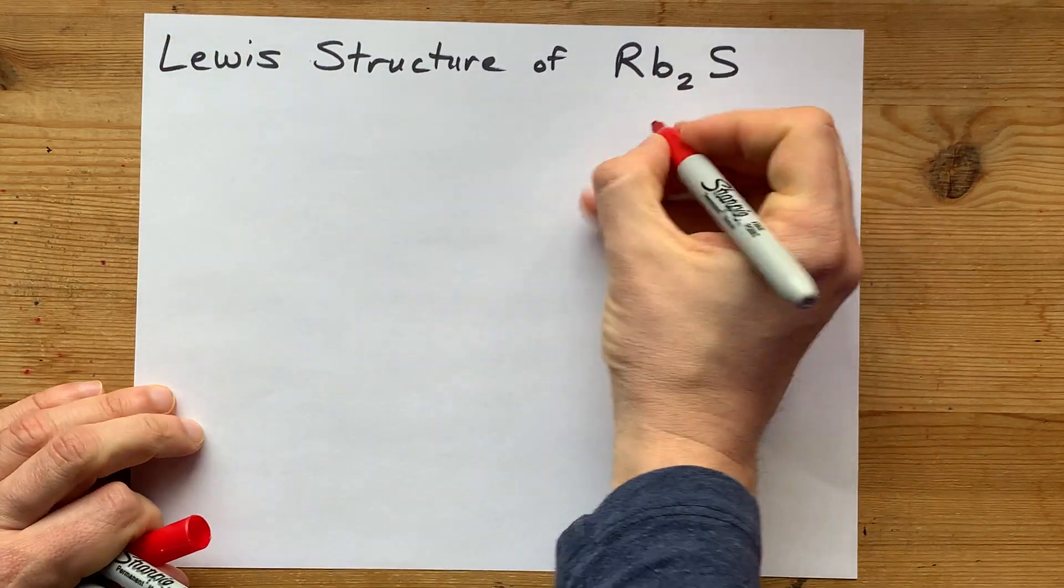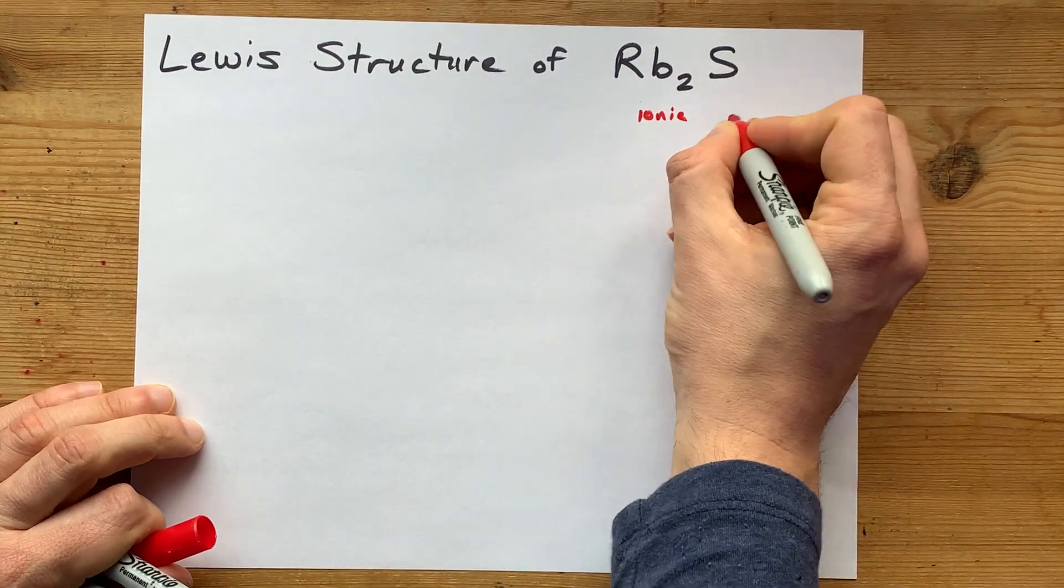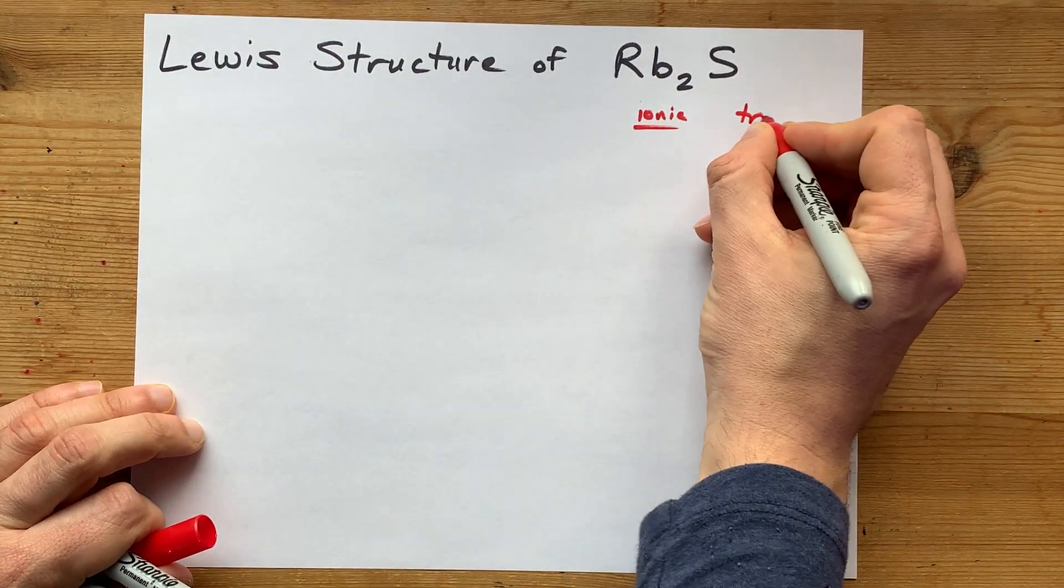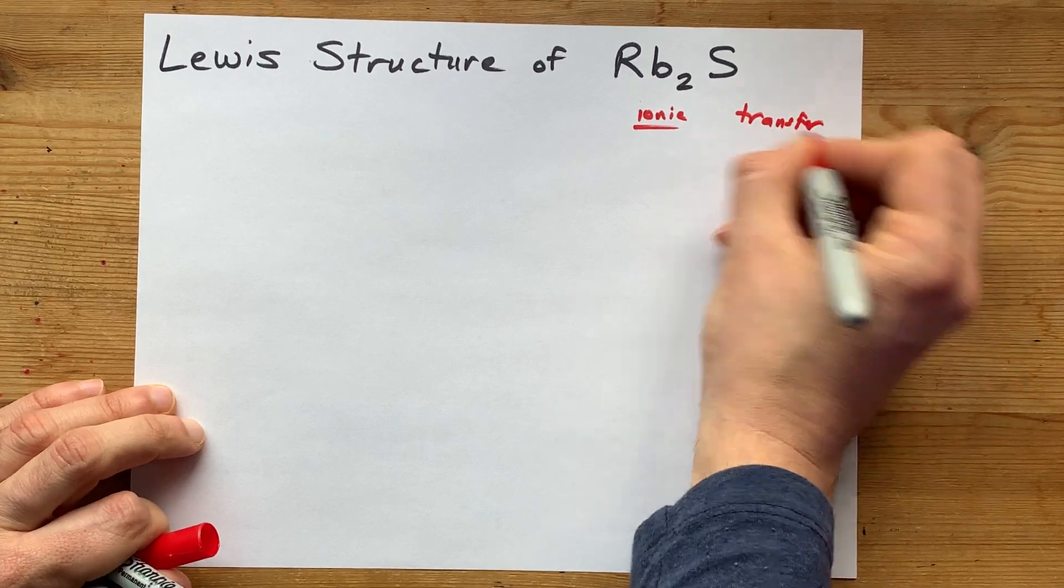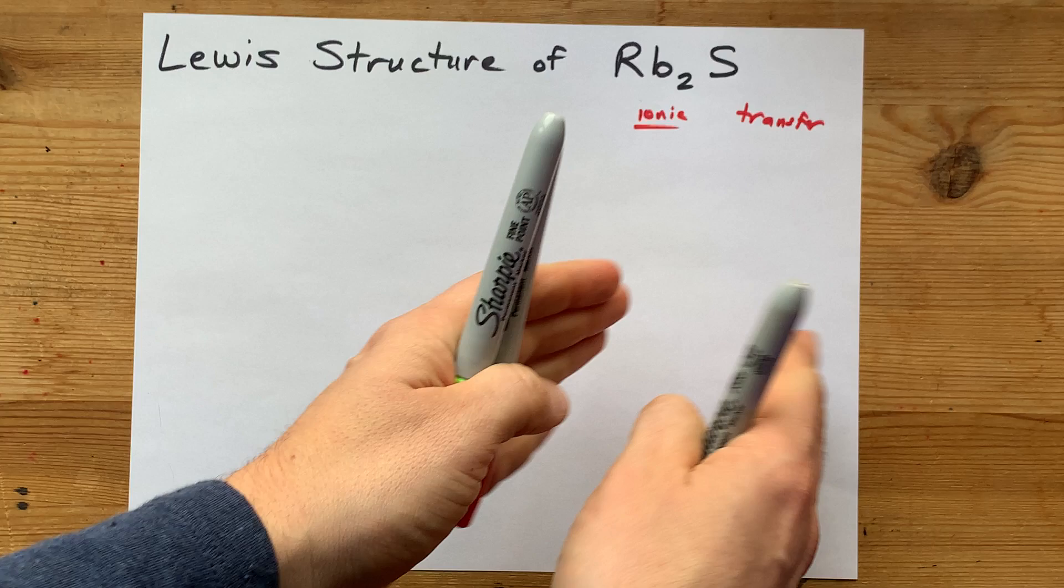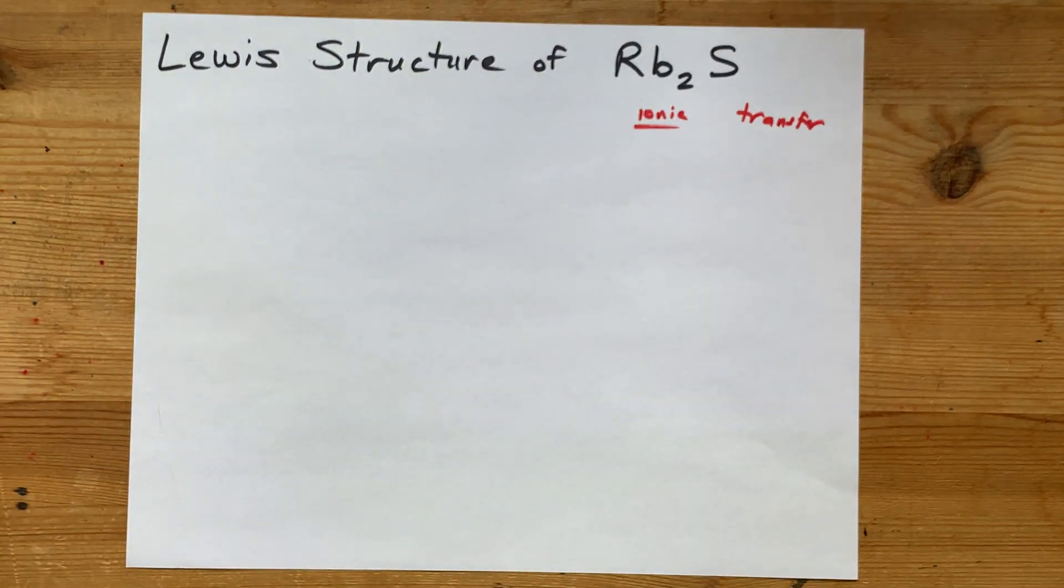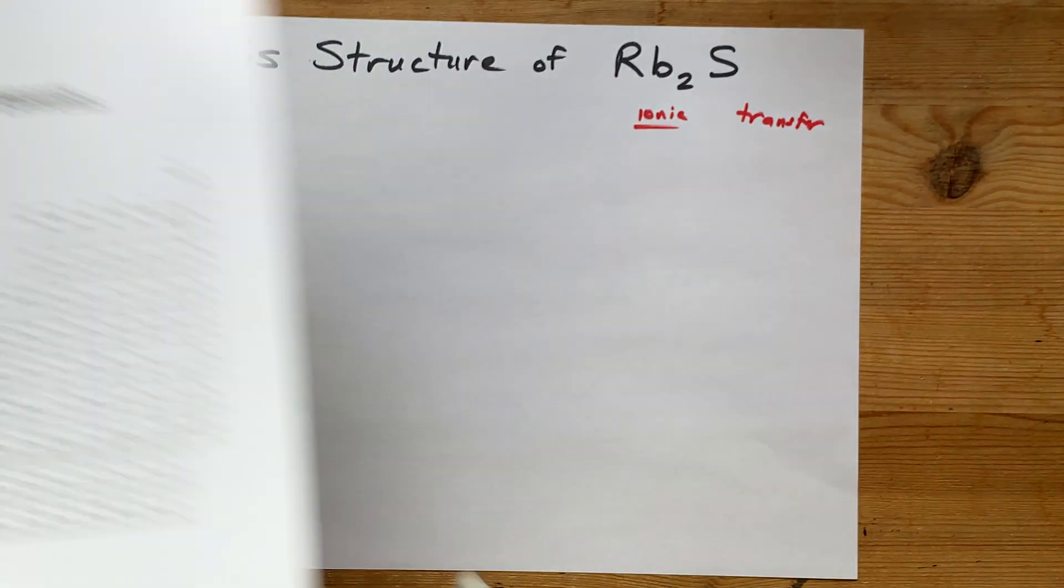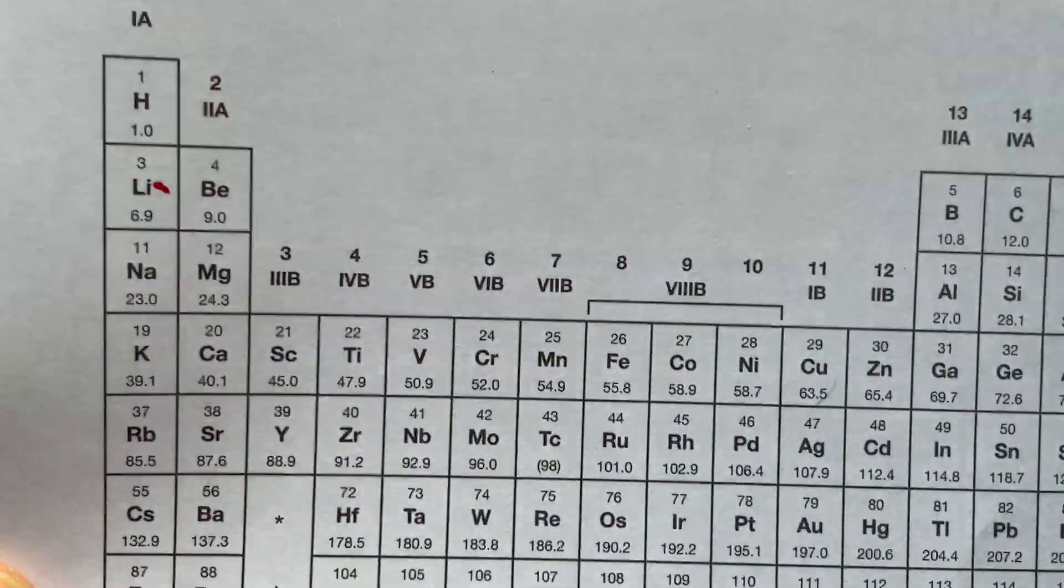When you have metals and non-metals bonding together, it becomes an ionic compound. There is a transfer of electrons from the metals to the non-metals. Now I'm going to show you how exactly that happens because that's what you came for.